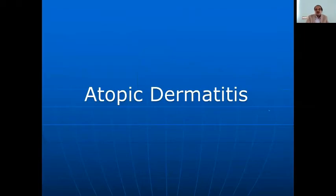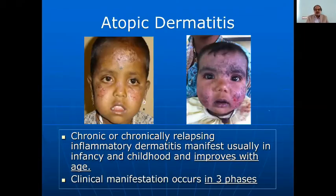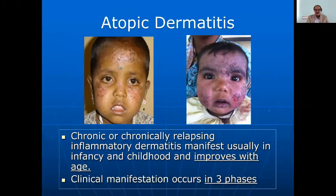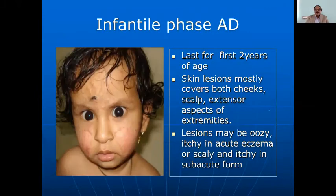Atopic dermatitis is a chronic or chronically relapsing inflammatory dermatitis, manifesting usually in infancy and childhood and improving with age. Clinical manifestations occur in three phases. The first is the infantile phase, lasting about two years, where skin lesions mostly cover both cheeks. Lesions are oozy and itchy in the acute phase, and scaly and itchy in the subacute phase.